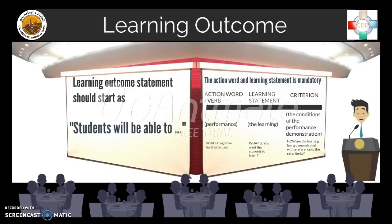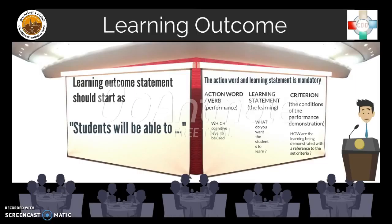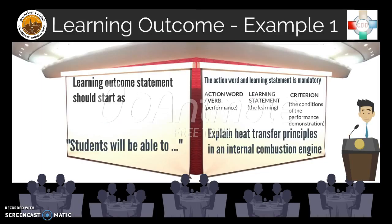The learning statement reflects the learning, which can be the topics you want the students to learn. You can ask yourself: what do you want the students to learn? The criterion refers to the conditions of the performance demonstration. It is optional, but for measuring the KPI it is highly recommended. You can ask yourself how the learning is being demonstrated with reference to the set criteria.